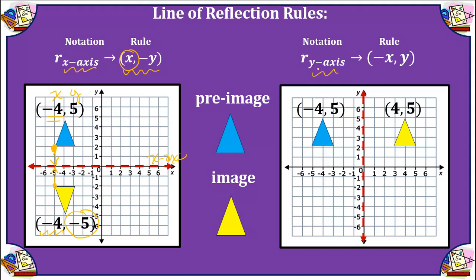Now let's look at reflecting across the y-axis. Our pre-image point is negative four, five. When we flip it across the y-axis, we get four, five. So when reflecting across the y-axis, the y-coordinates remain the same but the x-coordinate changes to the opposite sign. Whichever axis you reflect across, that coordinate stays the same, and the other coordinate changes to the opposite.